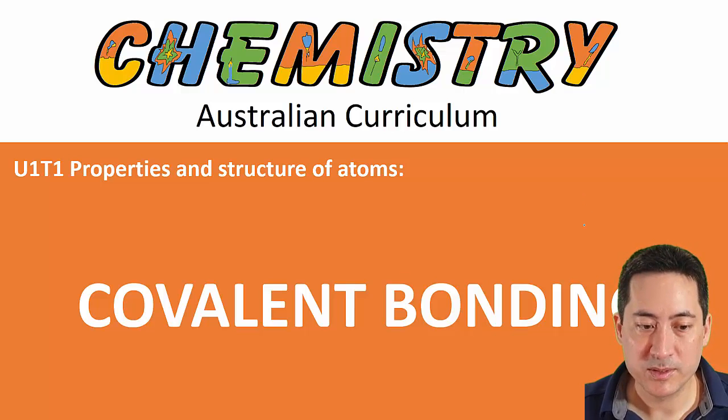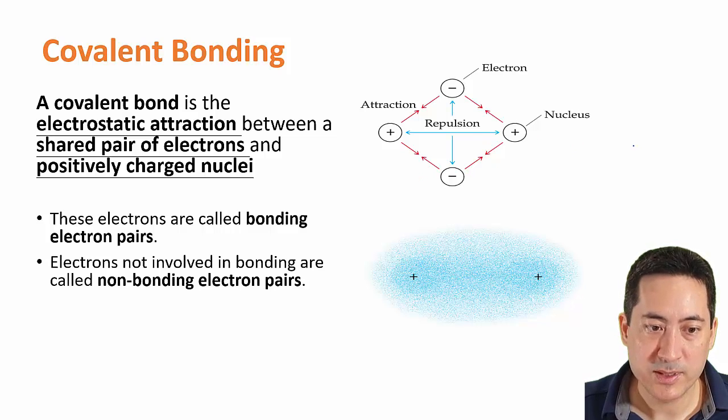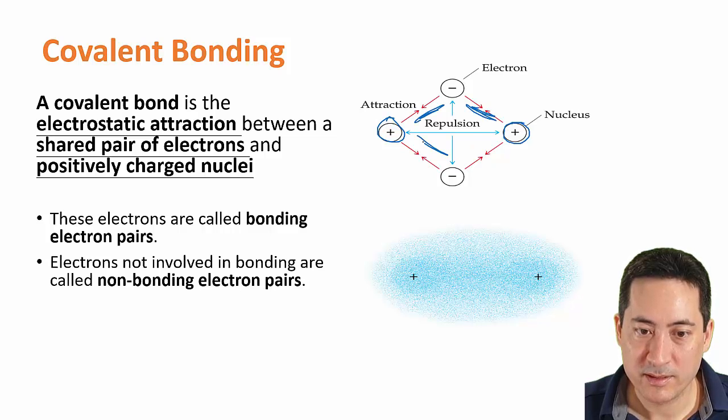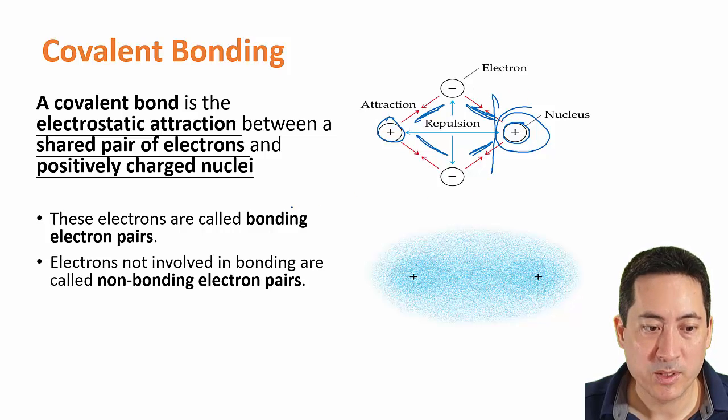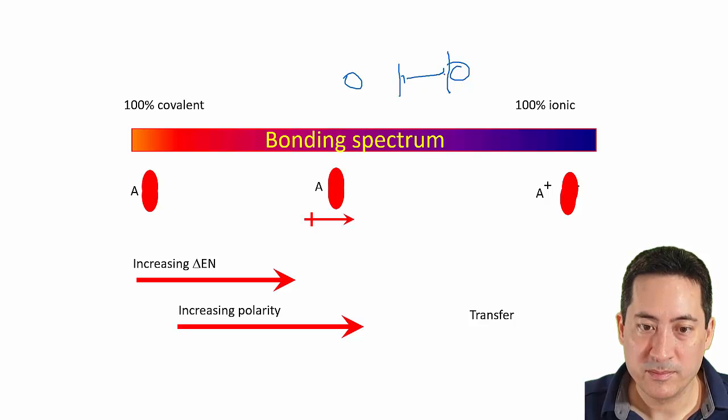So moving on to covalent bonding now. This is just about the bonding. So covalent bond is the electrostatic attraction between a shared pair of electrons and positively charged nuclei. So these things here are both pulling on the electrons with about the same strength. Although one could be slightly stronger, but once it gets too strong, it's ionic. It could be slightly stronger and that will be a polar bond. So this is just a graph to show you that there is a range. The electrons are in a range of places, either completely non-polar, completely ionic, or somewhere in between.